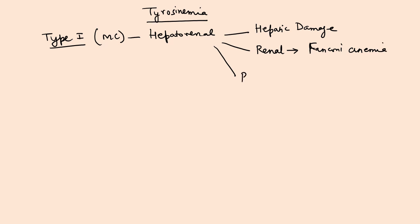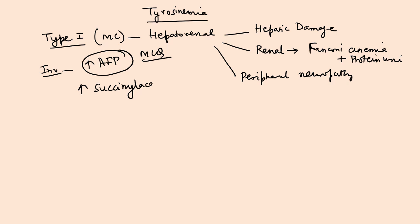These children have involvement of hepatic system, so progressive hepatic damage happens. Renal system involvement leads to Fanconi anemia-like disease. Third, they have peripheral neuropathy, Fanconi anemia with proteinuria, and peripheral neuropathy. When you do blood tests, you will find raised alpha-fetoprotein. This is very important MCQ point. There is also accumulation of succinylacetone in serum and urine. It is a toxic agent.